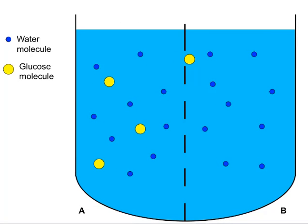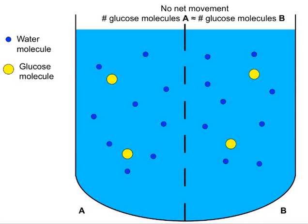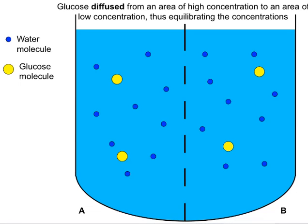The molecules keep moving back and forth. Until there is no net movement, because the concentrations are the same — it is just as likely that a molecule on side A will move to side B as a molecule on side B will move to side A. So even though molecules are moving back and forth, there is no net movement. The concentrations have equilibrated, meaning there is almost as much glucose in site A as in site B. This process is called diffusion.